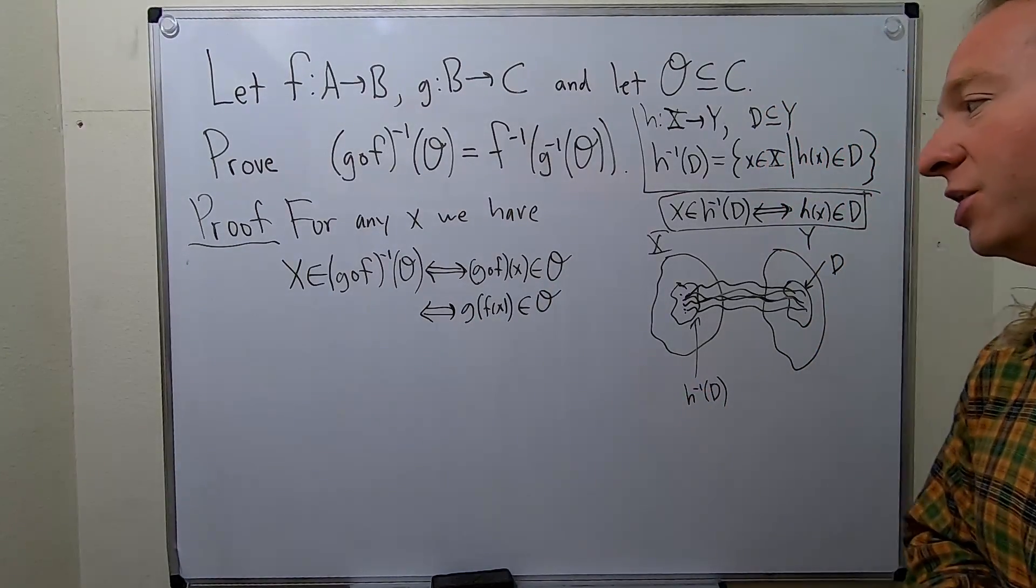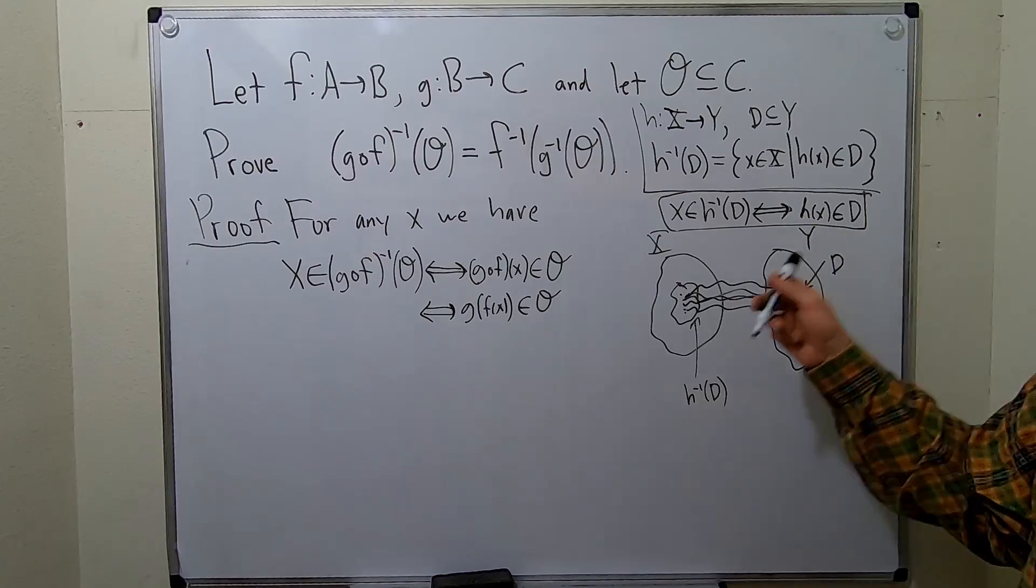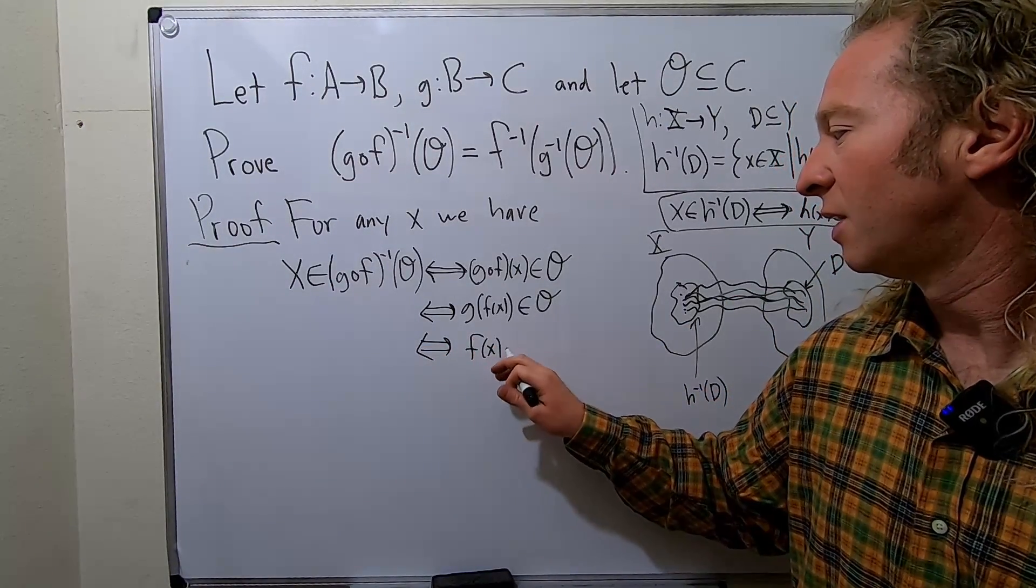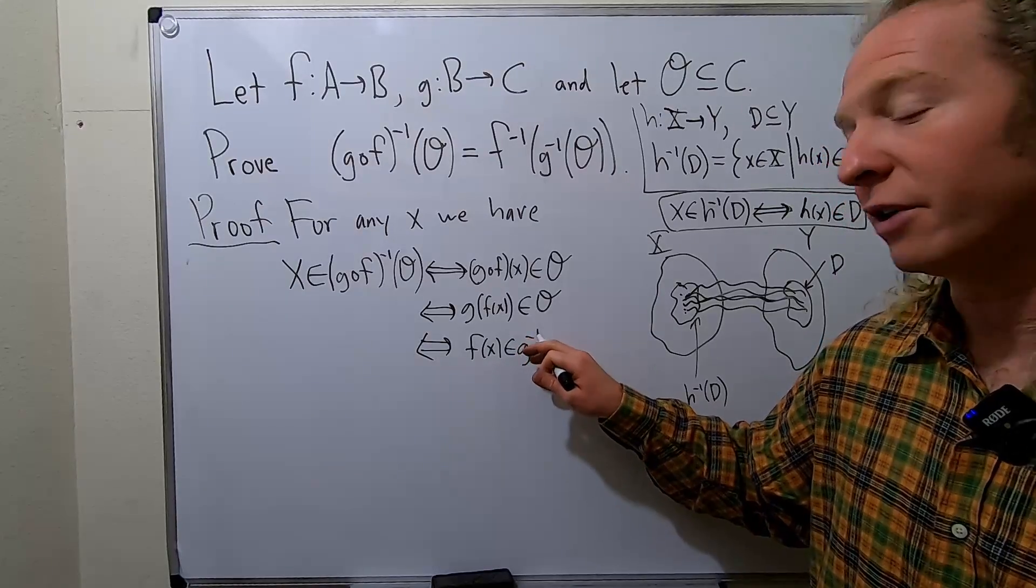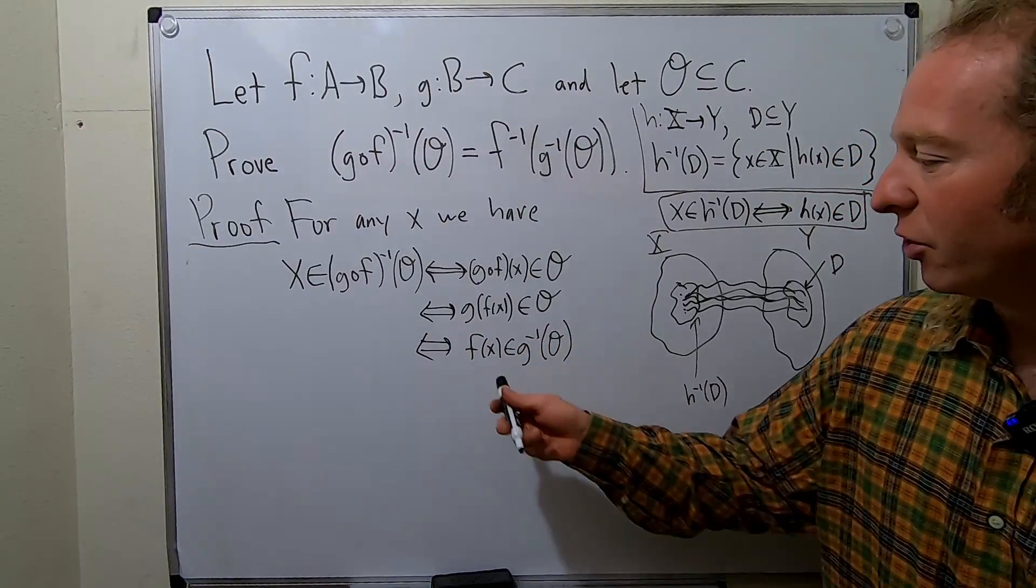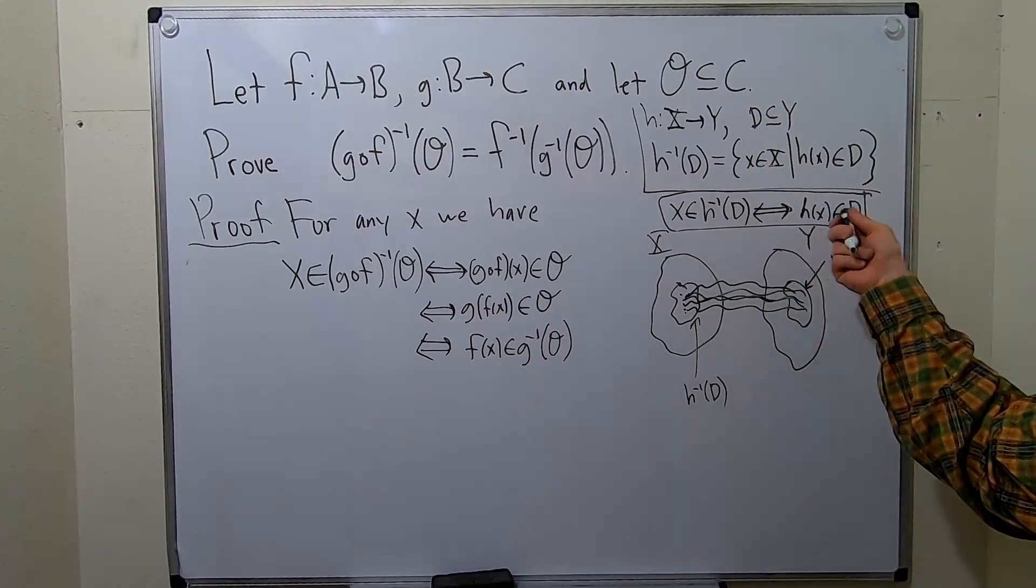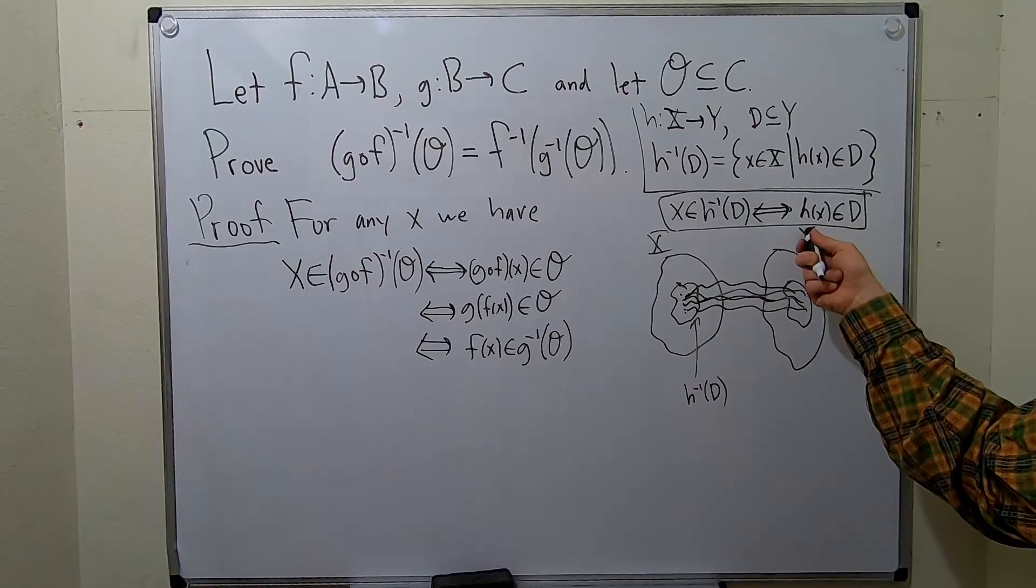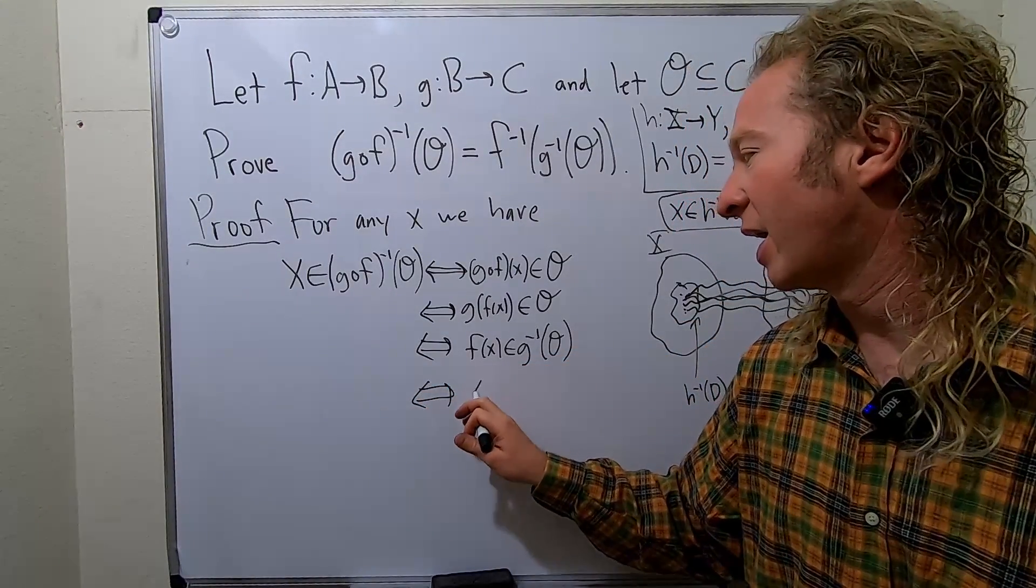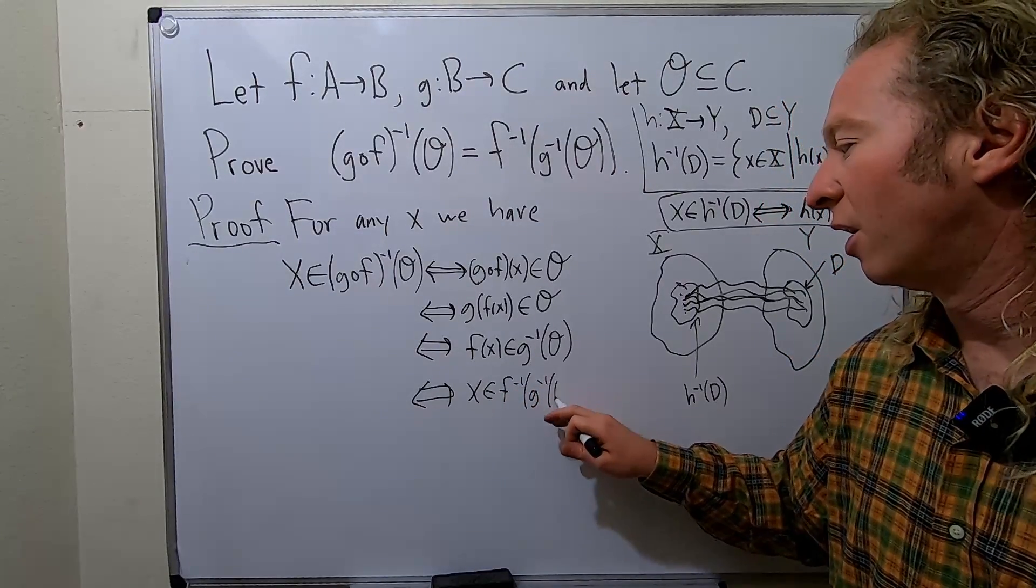Okay, so we have that G of F of X is in O. Okay, so G of F of X is in O means that F of X is in G inverse of O. Let me pause here and explain this again. So if F of X is in G inverse of O, that means G of F of X is in O. Same thing, right? Applying this definition once again. But what does this mean? This means that X is in F inverse of G inverse of O.